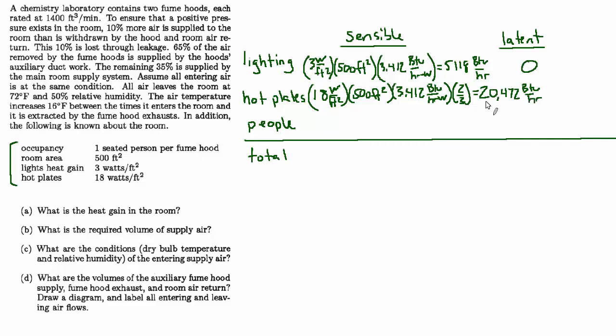And for the latent contribution, it's going to be one-third. So I'm just going to cut this number in half since I don't have space here. That's going to be 10,236.